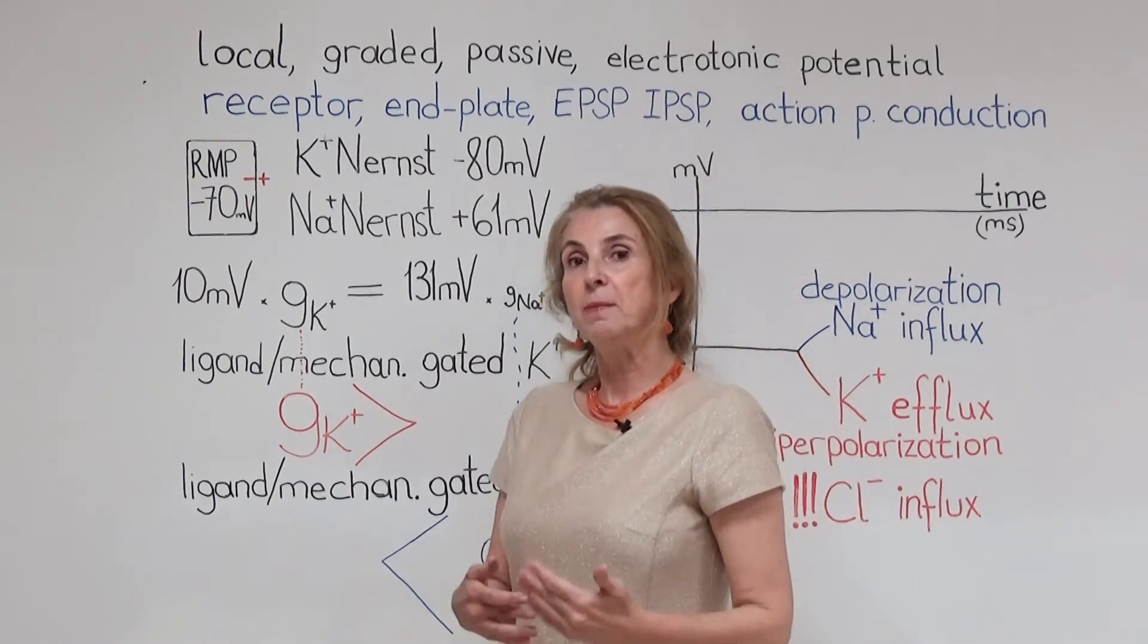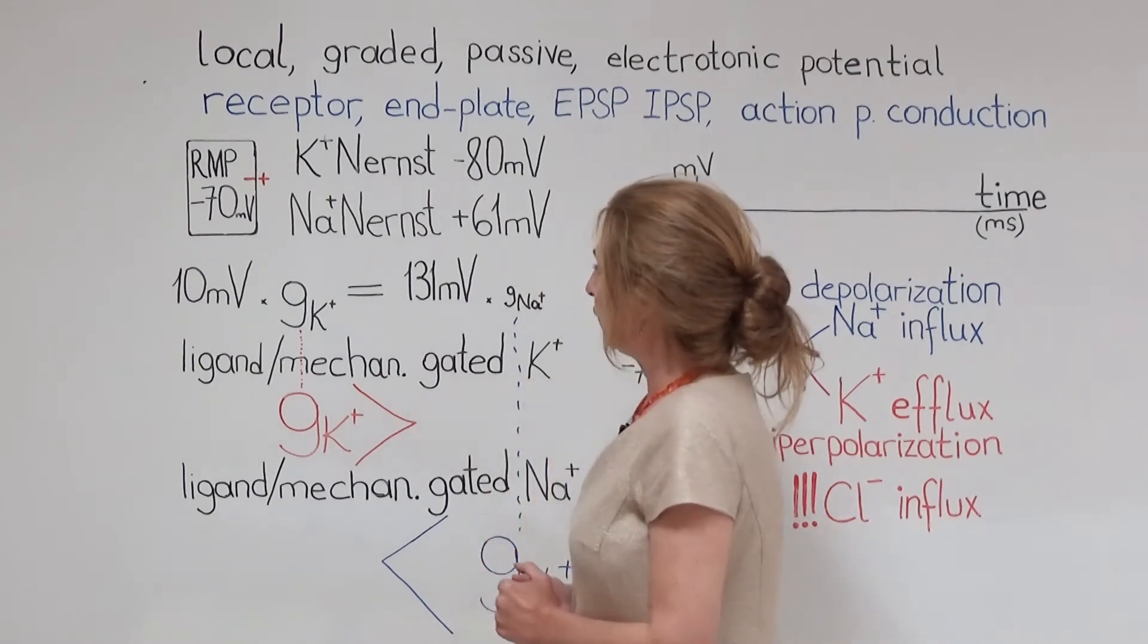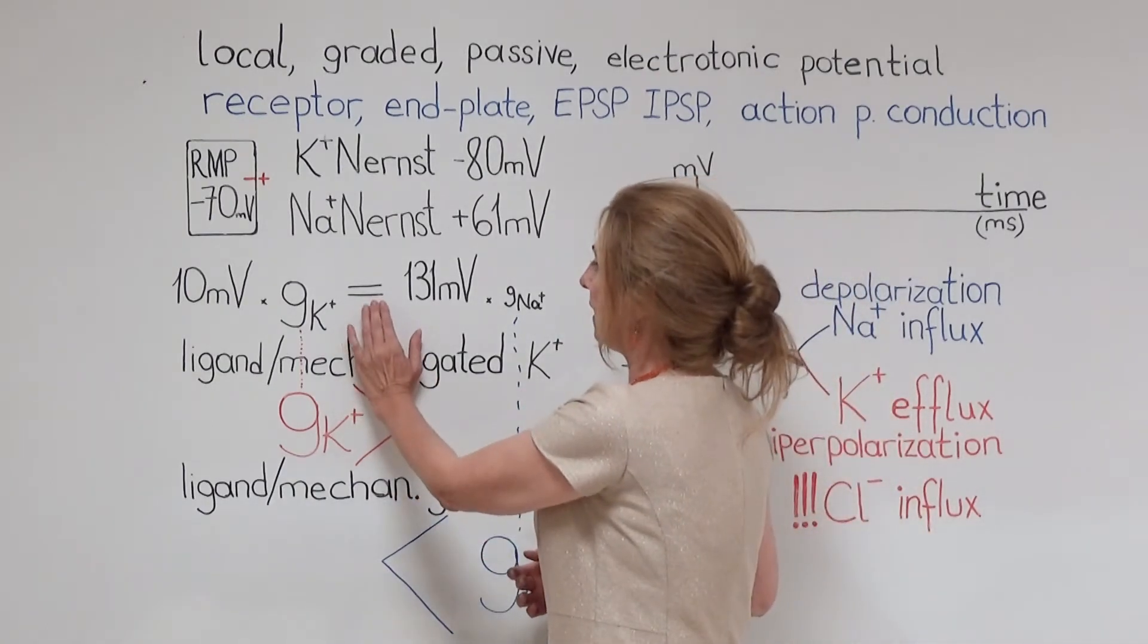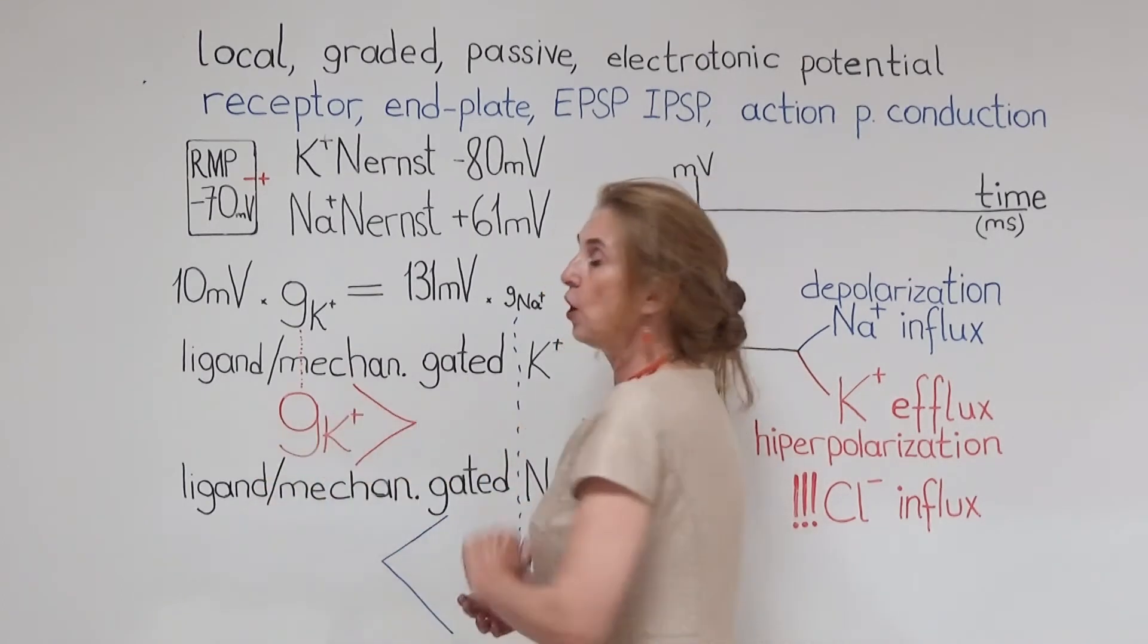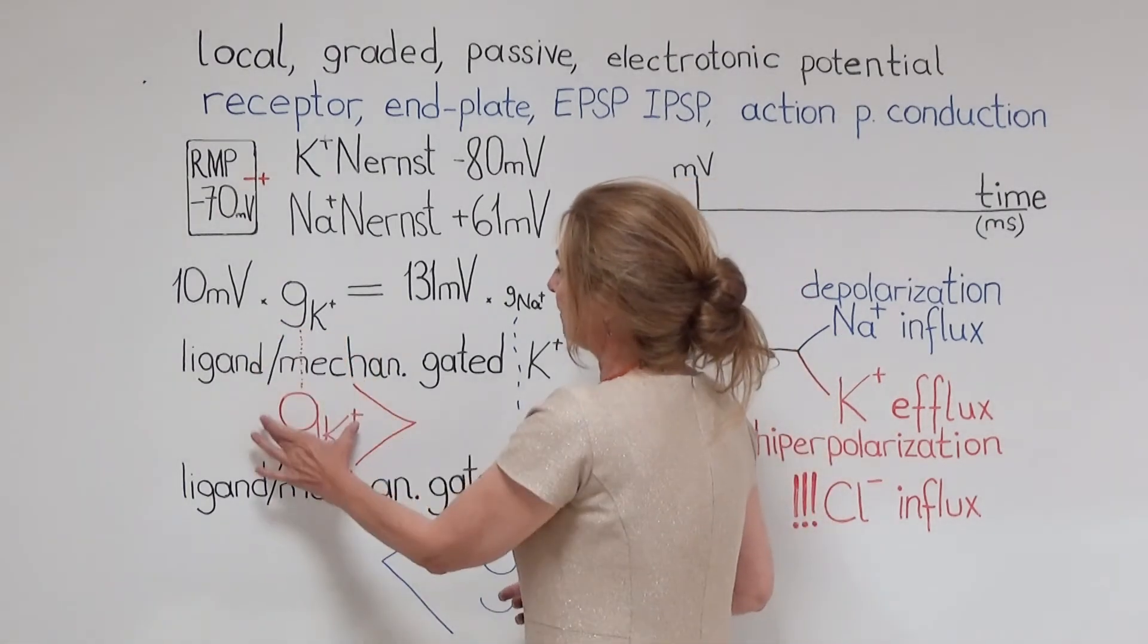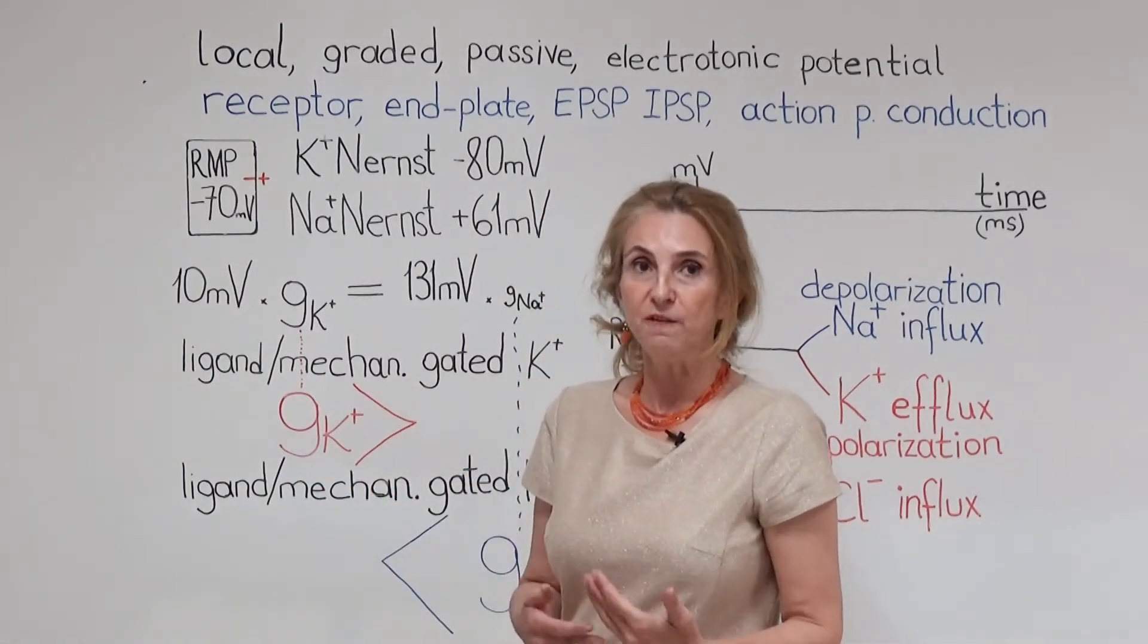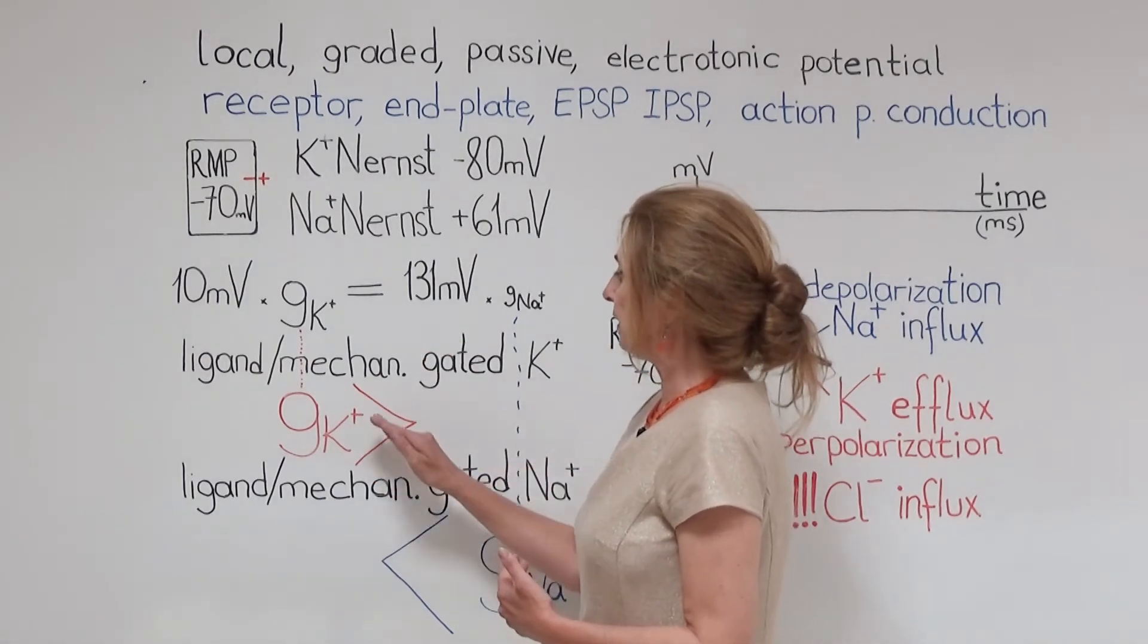Now, let us start talking about local potentials, local potential forming. If ligand or mechanically gated potassium channels open, this balance will change toward the benefit of potassium efflux. There will be a greater potassium conductance, and the same electrochemical force is going to result in a bigger potassium efflux, and this is going to overrate the sodium influx.